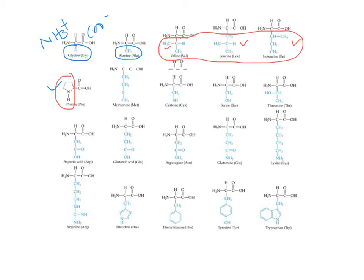Methionine and cysteine both contain sulfur. The difference is that the sulfur in methionine is not free, whereas the sulfur in cysteine is free — it has a thiol group that can interact with a neighboring cysteine to form a disulfide bridge. So there are two sulfur-containing amino acids: methionine and cysteine.